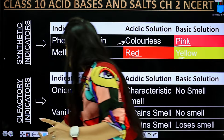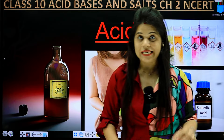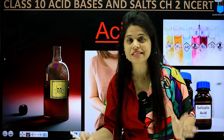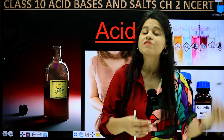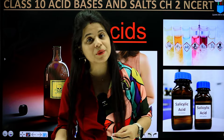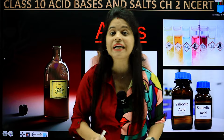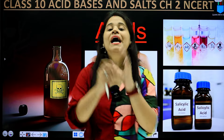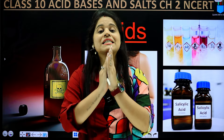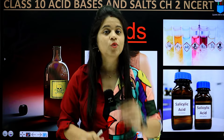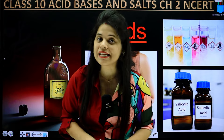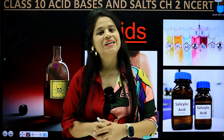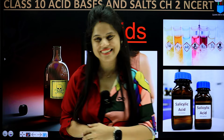So this was all about our indicators. In the next session we will discuss acids and bases — their physical properties and chemical properties. I hope you will understand the concepts better after watching the experiments. If there is any doubt or query, please leave it in the comments below. I will see you all in the next video — bye-bye!